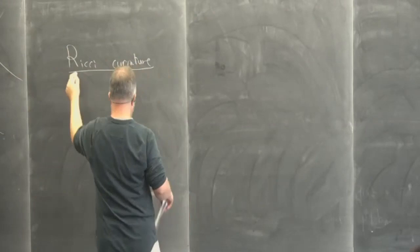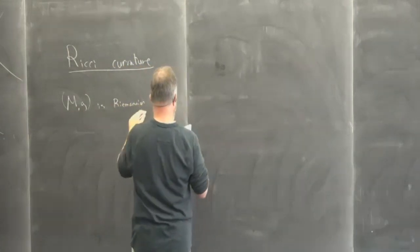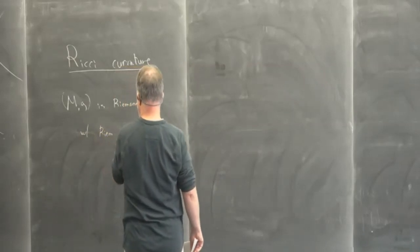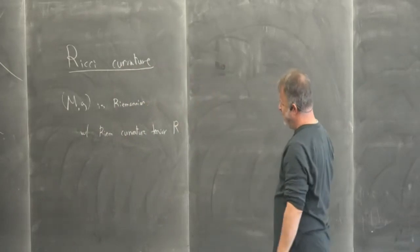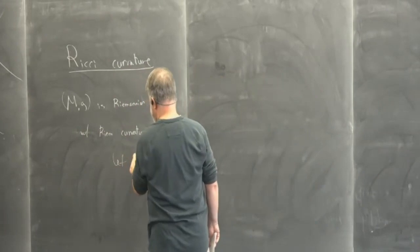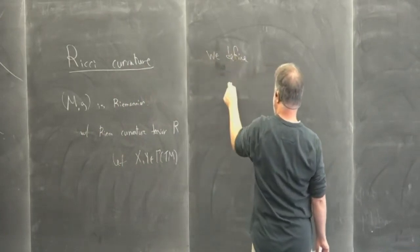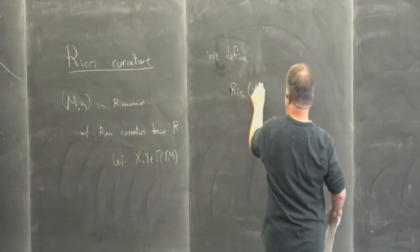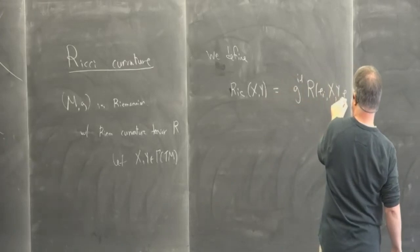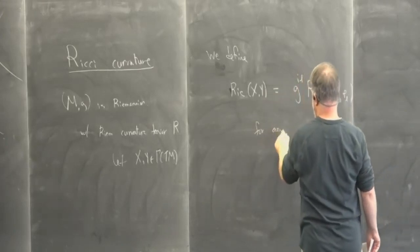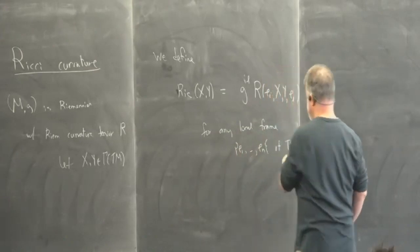Let's talk about Ricci curvature. So MG is Riemannian, and we have a Riemann curvature tensor R — this is a (0,4) tensor; there are two equivalent ways of describing it as a (1,3) or (0,4) tensor. Let X and Y be vector fields. We define Ric(X, Y) to be g^{IL} R(E_i, X, Y, E_L) for any local frame E_1 up to E_N of the tangent bundle. Here g^{IL} is the inverse matrix of g_{IL}, which is the positive definite symmetric matrix defined locally on some open set. So we need to show that this is independent of the choice of local frame.